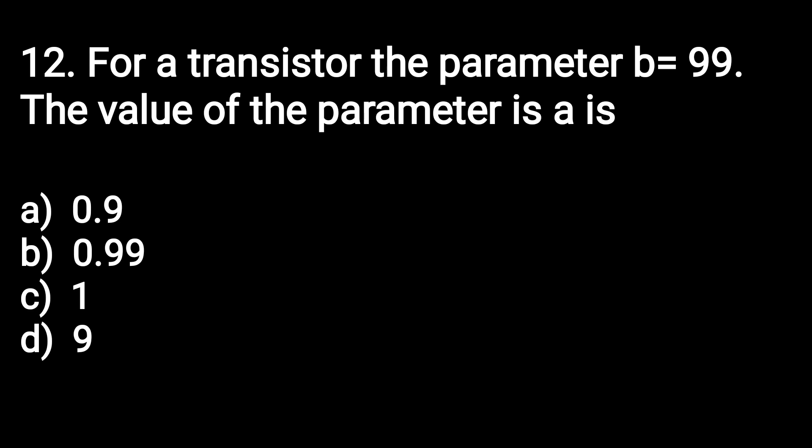Next question: if the beta (β) parameter of a transistor is 99, what is the value of the alpha (α) parameter? The alpha value will be 0.99. The formula for this is available in the theory lecture.